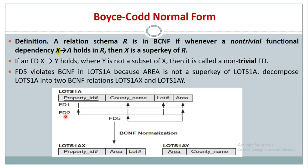Let us look into FD2. In FD2, county name and lot number determines area; county name and lot number determines property ID. Here county name and lot number together are a candidate key, so FD2 is also valid.